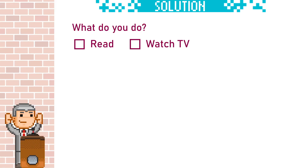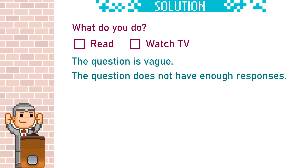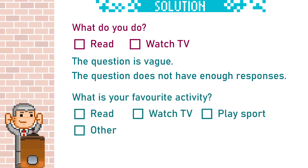When writing questions, it's really important to avoid being vague. 'What do you do?' is very vague — make sure that the person knows exactly what they're being asked. We also don't have enough responses. It's always good to remember that most great questions will have an 'other' or a 'none' box, or sometimes both. So a better question is: what is your favourite activity — read, watch TV, play sport, or other?